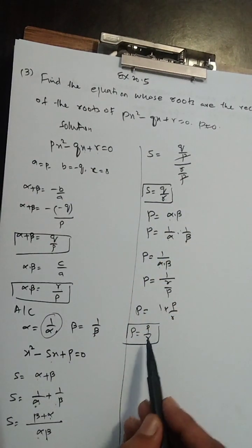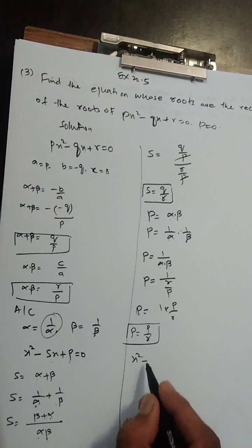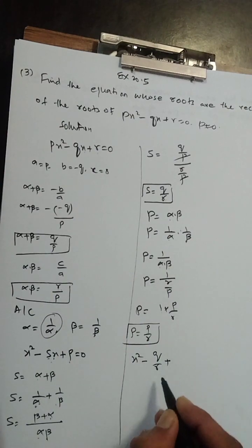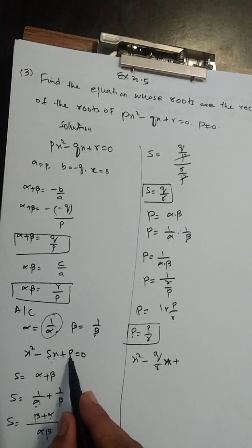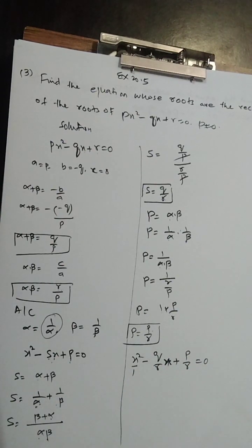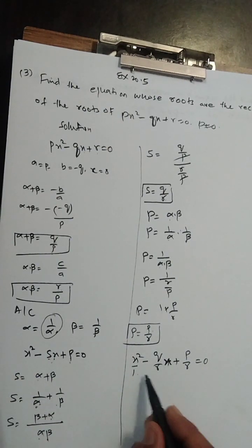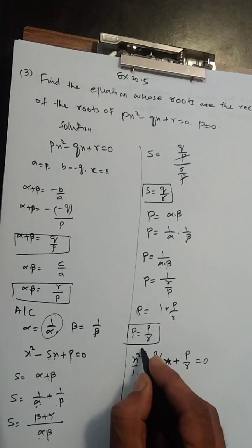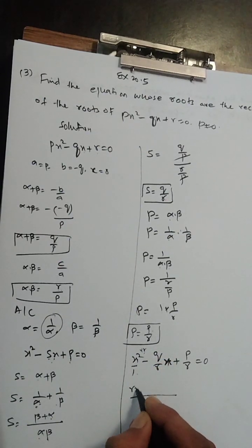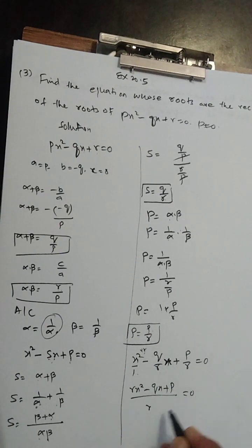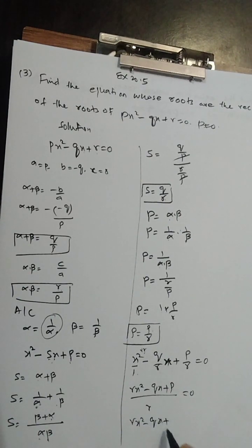Product of roots = p/r. Now equation: x² - (sum of roots)x + (product of roots) = 0. Sum = q/r, product = p/r. Putting values: x² - (q/r)x + (p/r) = 0. Multiply throughout by r: rx² - qx + p = 0. This is the required equation.